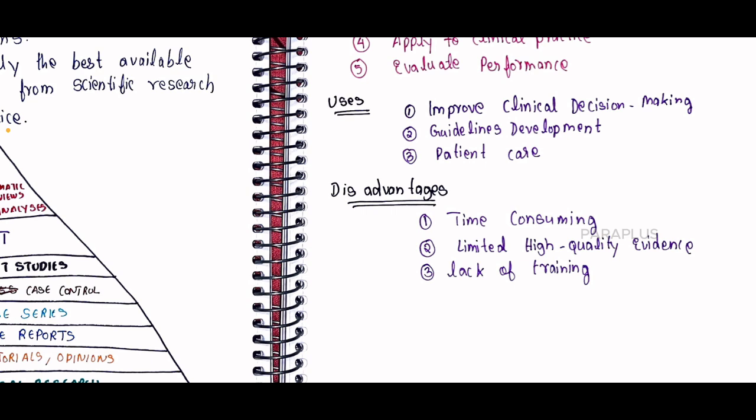Lack of training — if you are doing research, you Google and browse: what is the best medicine? We have little training in computer skills, reading articles, and learning skills. So we have a lot of people with a lack of training.